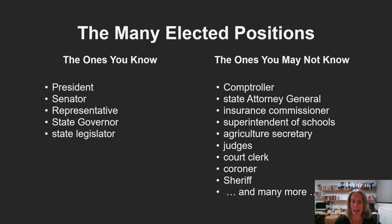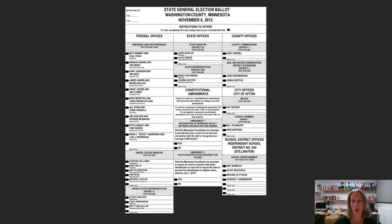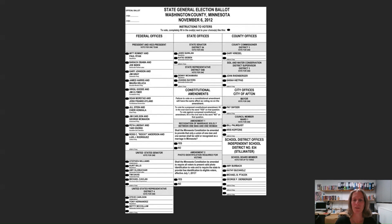A lot of Americans now use electronic voting machines. But to give you an idea of just how many elections Americans might be asked to vote in at the same time, this old paper ballot shows the range of elections people might be asked to vote for. It's not simply turning up and voting for president, member of the House and Senate — there are a lot of what come to be called down-ticket elections as well.